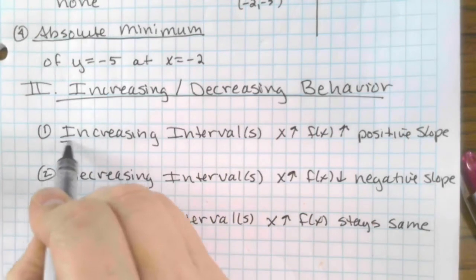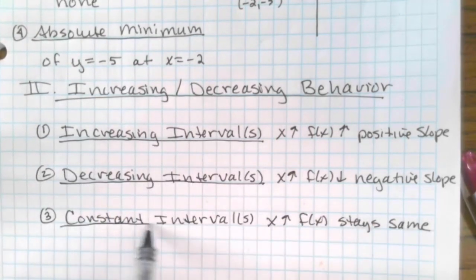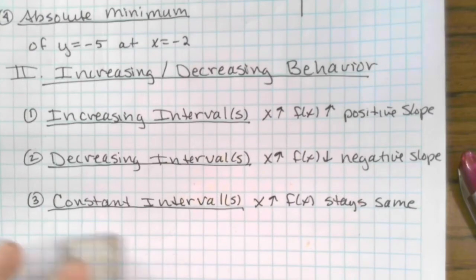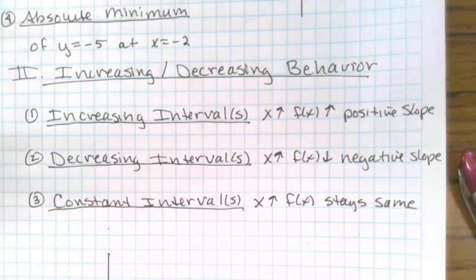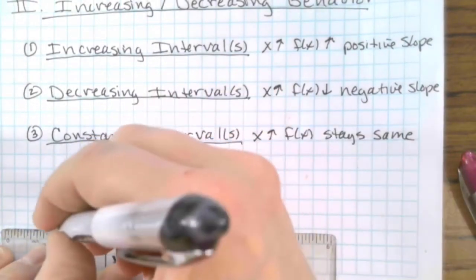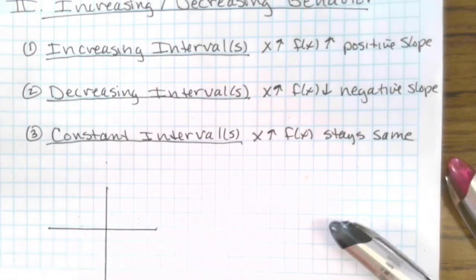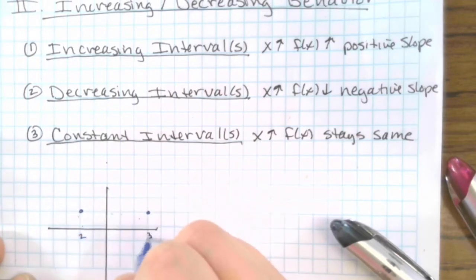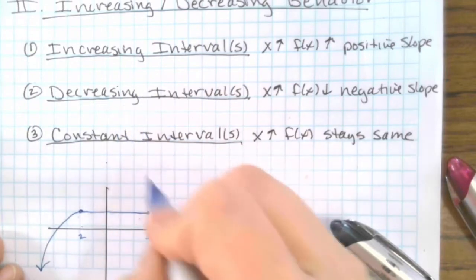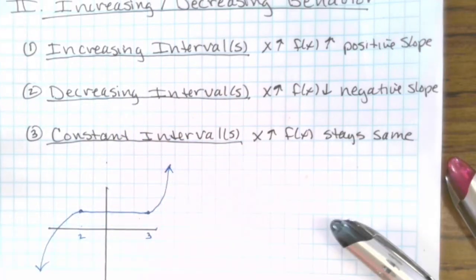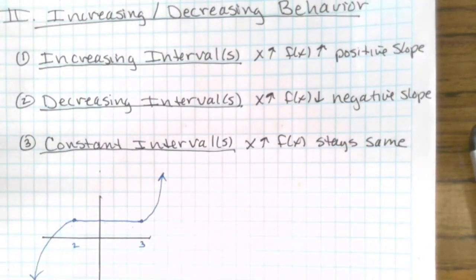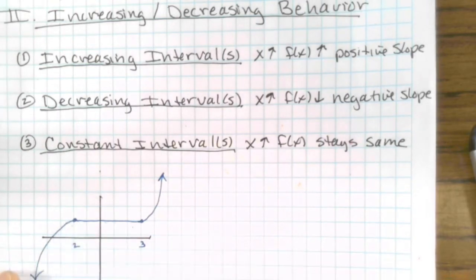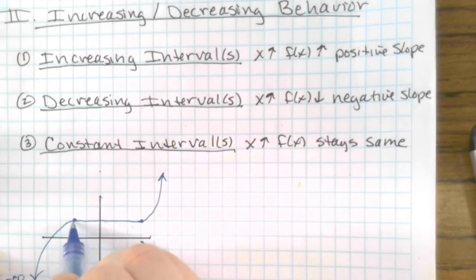When they're asking for increasing or decreasing behavior, what they're looking for are intervals. Intervals are always x values. We're going to draw a little sample graph. I'm drawing a little pair of axes. This graph — we'll put it at 1, 2, 3 — it comes up, it is flat, and then it keeps going. So our increasing interval is from negative infinity. We're looking for x values. Negative infinity and then it stops at 2, so your increasing interval is negative infinity up to 2 inclusive.